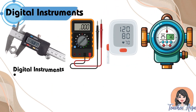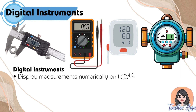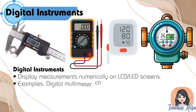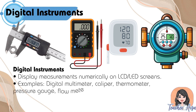Digital instruments display measurements numerically on LCD or LED screens. Examples are: digital multimeter, caliper, thermometer, pressure gauge, and flow meter.